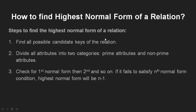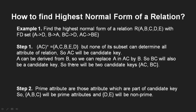To find the highest normal form of a relation, first you have to find out all possible candidate keys of the relation. You will be given a relation and functional dependencies, and you have to find all possible candidate keys. Then divide the attributes into two categories: prime attributes, which are part of a candidate key, and non-prime attributes, which are the others. Then check for first normal form, then second normal form, then third normal form in sequence.